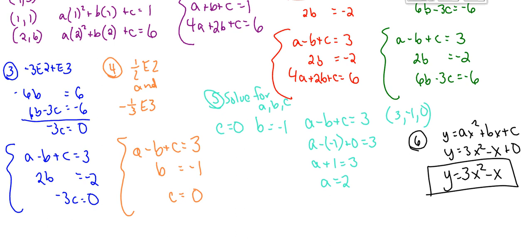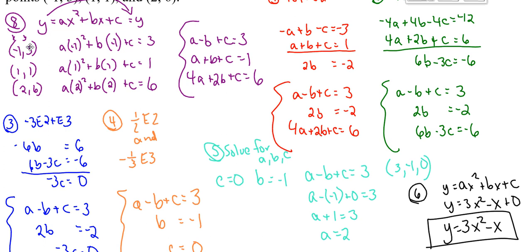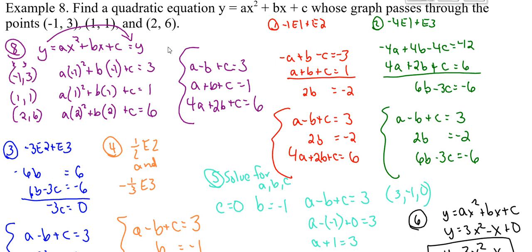And that is a quadratic equation that has those points, negative 1, 3 is 1, 1, and 2, 6 as coordinates of points that are on that parabola.